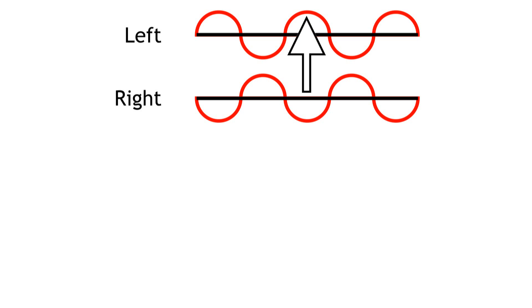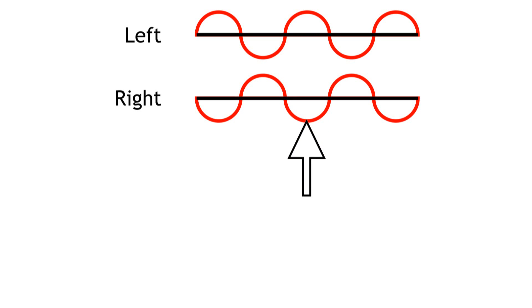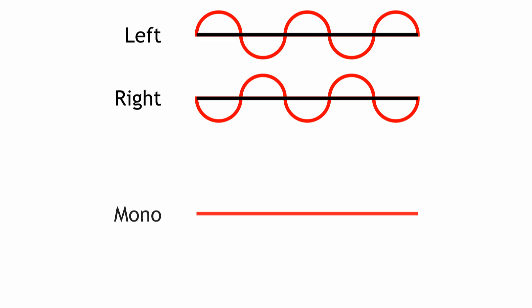When the left channel has a peak, the right channel has a trough, and vice versa. When listening through stereo speakers, that's no problem. But as soon as you combine the signals to go through a mono speaker, they cancel each other out. This is called destructive interference, and it makes the mono signal much quieter than it should be — sometimes completely silent.